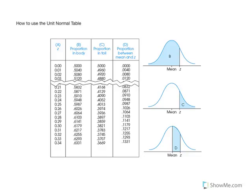This slide illustrates a portion of the unit normal table. At the top we see different columns: A, B, C, and D. Column A is the z-score. When you are trying to find the proportions or probabilities specific for a particular z-score, you would transform the score into a z-score and enter the table using the z-column.